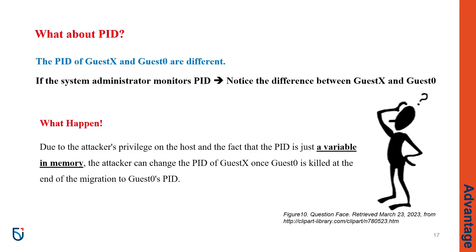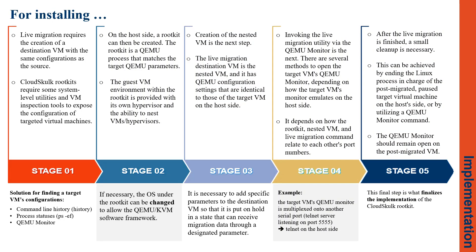But what about PID? Is it the same? No, there is not the same. If the system administrator monitors PID, they can find the difference. But PID is just a variable in memory — an attacker can first kill guest 0 and then change the PID of guest X. Implementation has five steps. In the first step, live migration requires creating a destination VM with the same configuration as a source, so they need some information. They can use the history command line, process status, and the QEMU monitor to gather data.